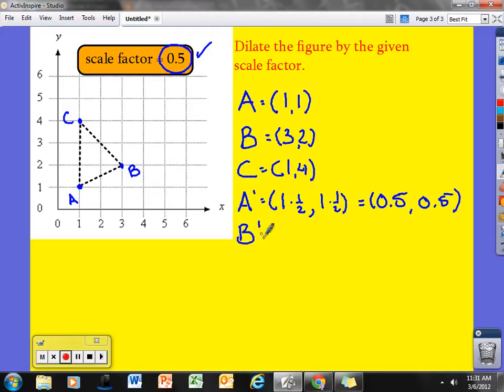If I go to B prime, B prime was originally 3, 2. We take the 3 and multiply that by a half. And then we take the y value, which was 2, and multiply that by a half. We now get the new ordered pair: 3 times a half is 1 and a half or 1 and 5 tenths. The new y would be 1 because 2 times a half is 1. I now do my new C prime.